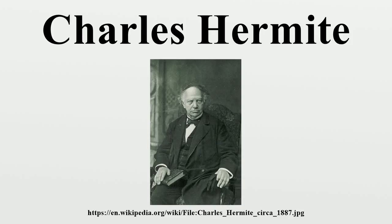Publications: Sur Quelques Applications des Fonctions Elliptiques, Paris, 1855. Cours d'Analyse de l'École Polytechnique, Première Partie, Paris, Gauthier-Villars, 1873. Cours professé à la Faculté des Sciences, edited by Anne Autonne, 4th ed., Paris, 1891. Correspondence, edited by Baillaud and Bourget, Paris, 1905, 2 vols. Œuvres de Charles Hermite, edited by Picard for the Academy of Sciences, 4 vols., Paris, Gauthier-Villars, 1905, 1908, 1912, and 1917. Œuvres de Charles Hermite, reissued by Cambridge University Press, 2009, ISBN 978-1-108-00328-5.